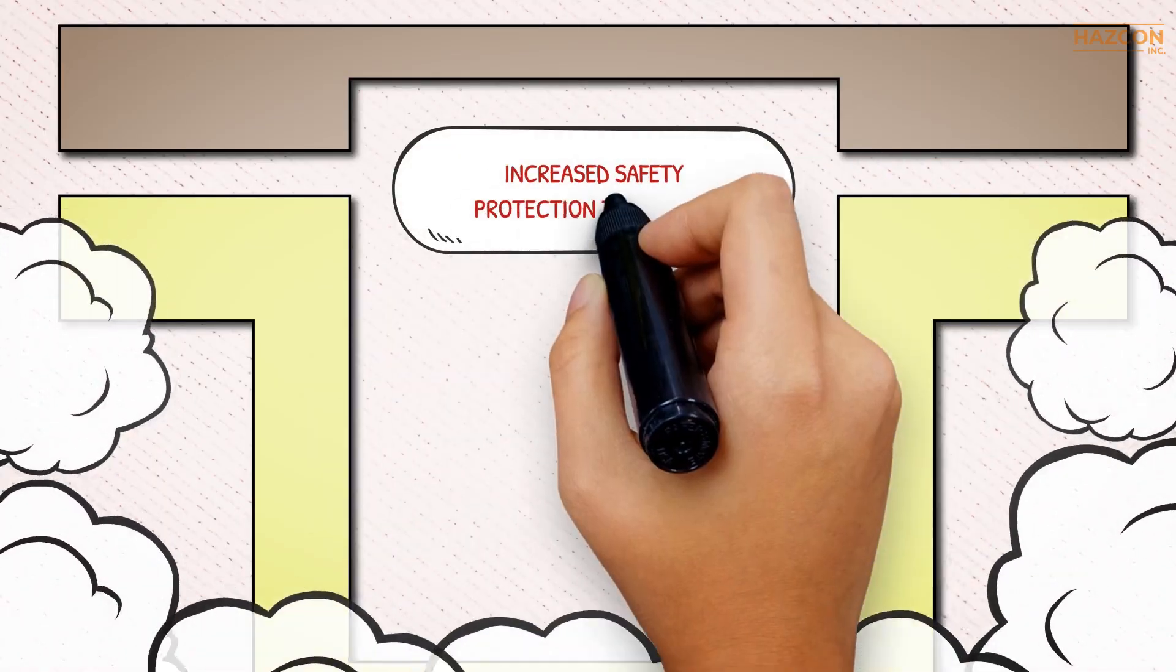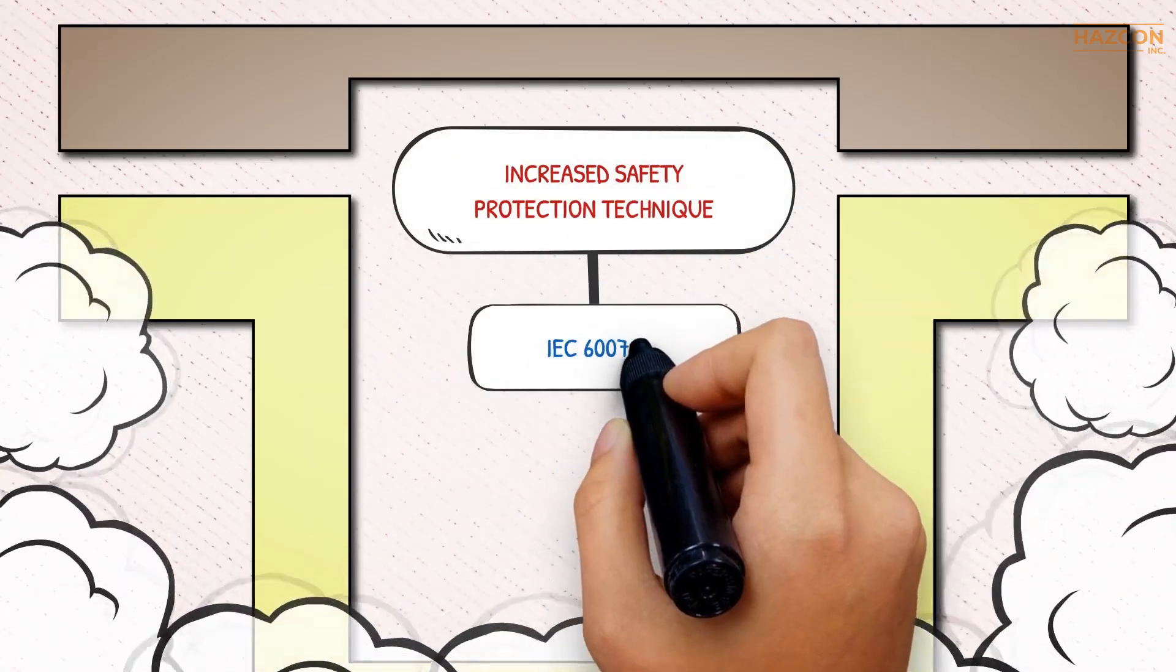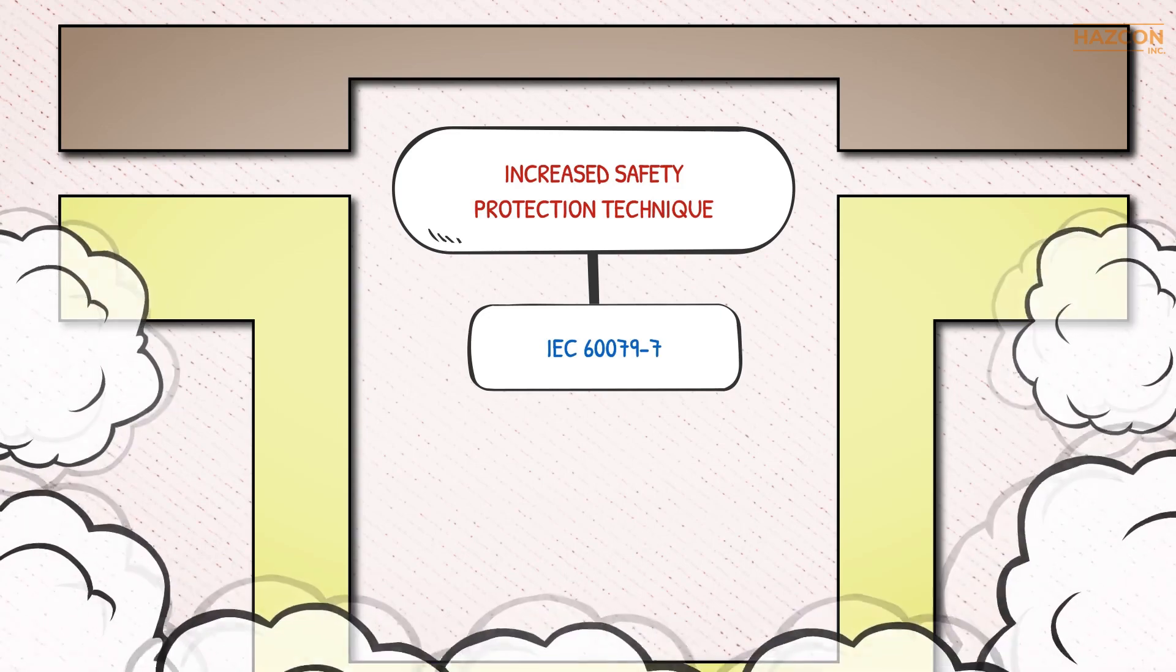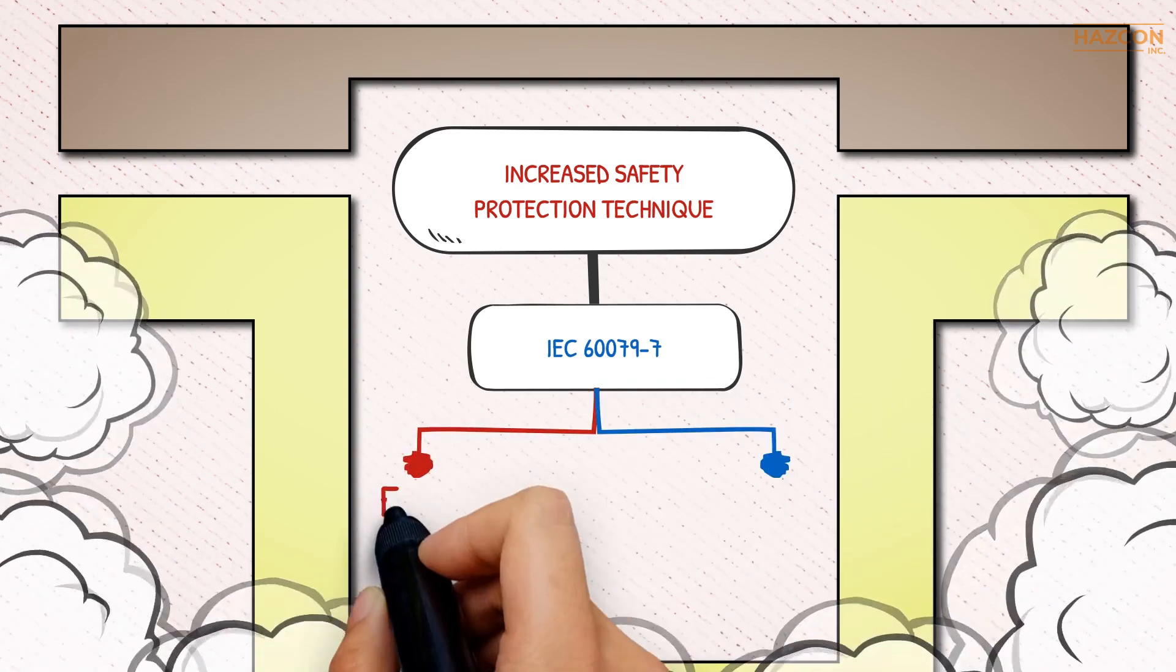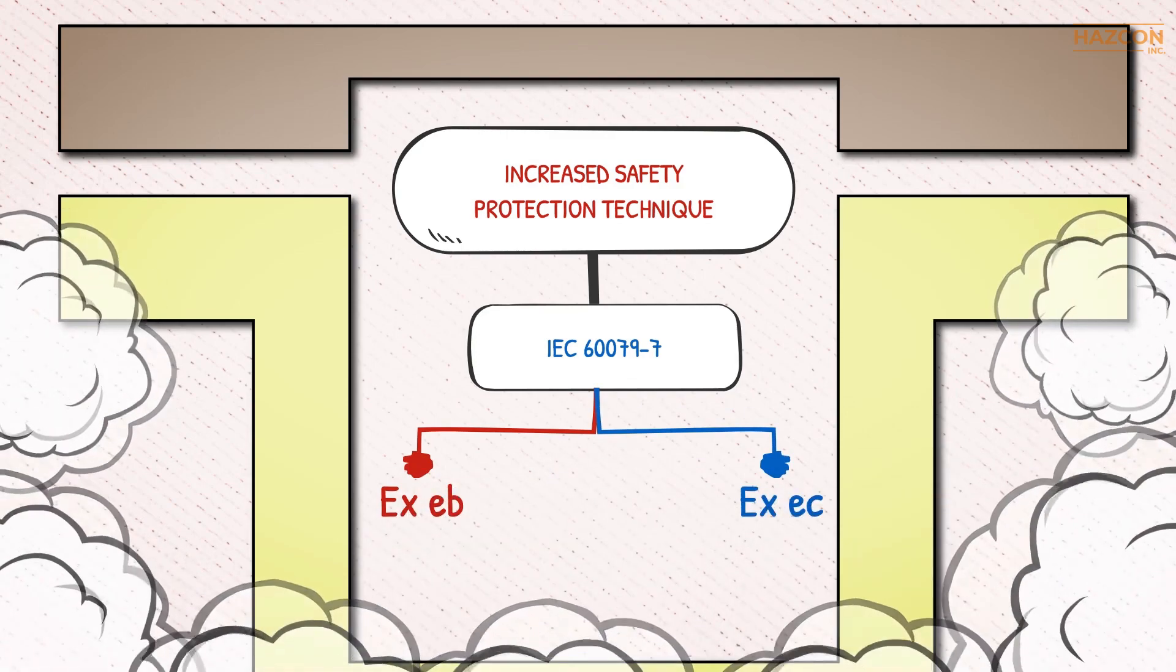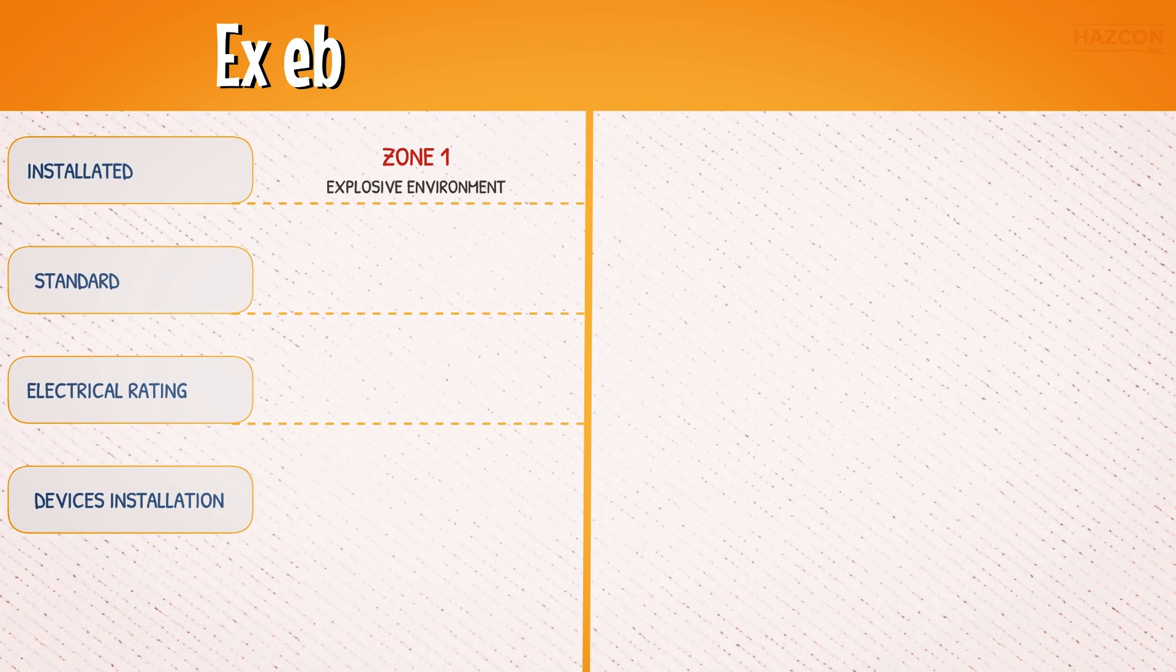To use the increased safety protection technique, equipment must comply with the IEC 60079-7 standard. There are two Ex markings and protection levels in the standard: Ex eb and Ex ec. Equipment marked Ex eb may be installed in Zone 1. As per the scope of standard IEC 60079-7, only electrical equipment with a maximum electrical rating not exceeding 11 kV may use this level of protection.